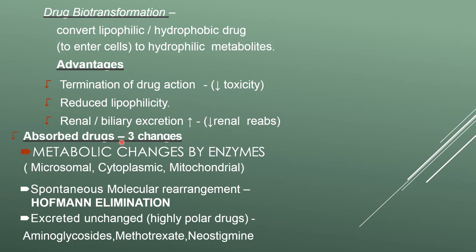An absorbed drug has three types of changes: metabolic changes involving enzymes — microsomal, cytoplasmic, or mitochondrial — spontaneous molecular rearrangement such as Hofmann elimination, and excretion unchanged. Highly polar drugs excreted unchanged include aminoglycosides, methotrexate, and neostigmine.